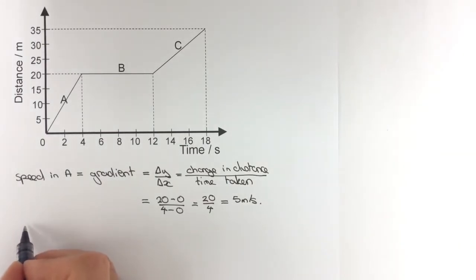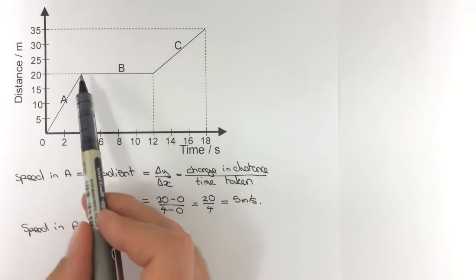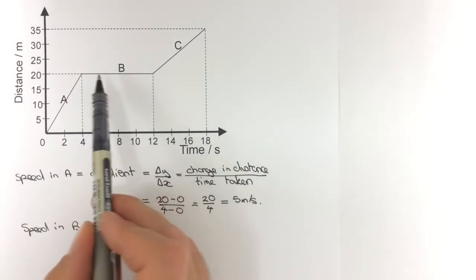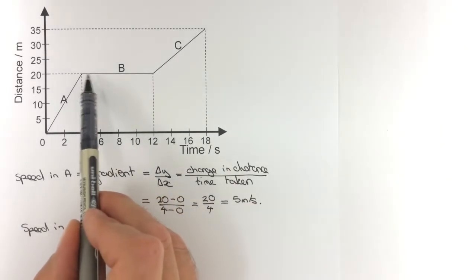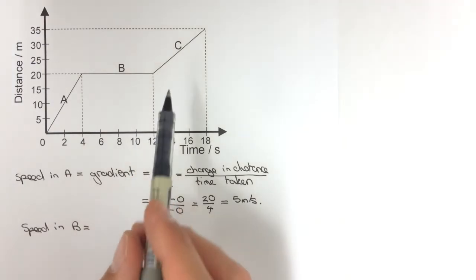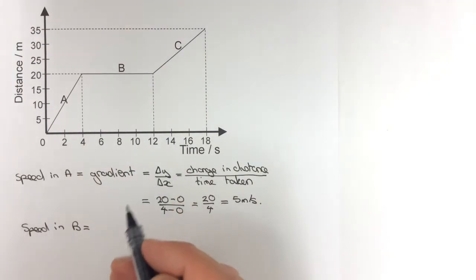For the speed in section B, it's again going to be the gradient. If I look at this, the gradient is 0. I could just look at it and see the distance stays at 20 the whole time, so it's stationary. Without any calculation, the speed is 0 meters per second.